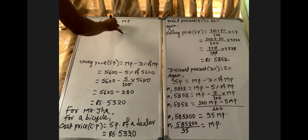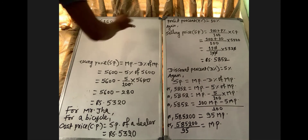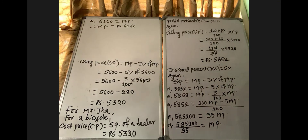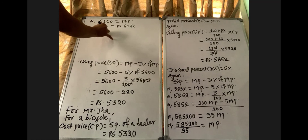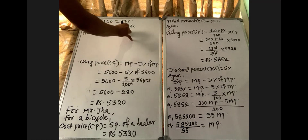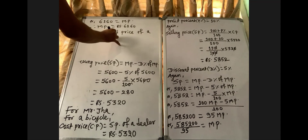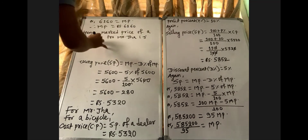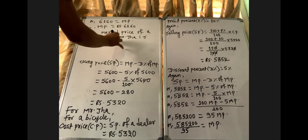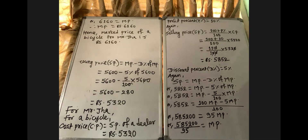Therefore, the mark price of the bicycle for Mr. Zha is Rs 6160. That's the conclusion. If you have any problems, you can ask. We found the mark price of the bicycle for Mr. Zha is Rs 6160.